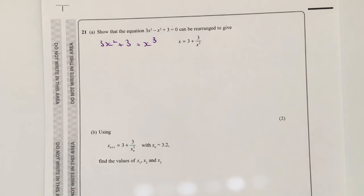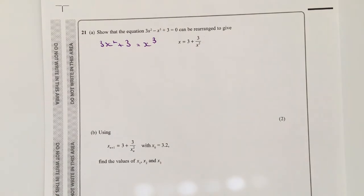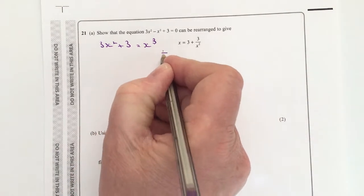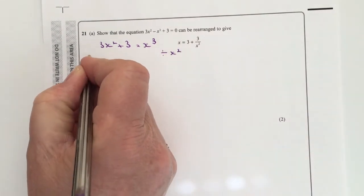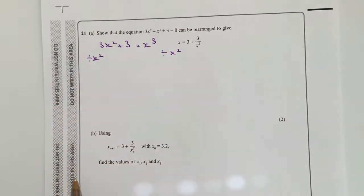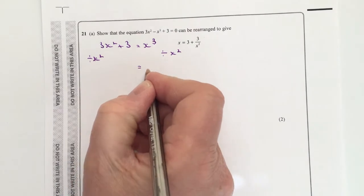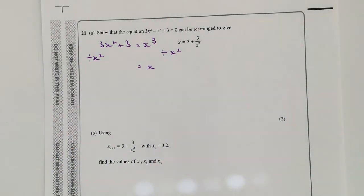And then I want to solve, or at least I want to make x the subject of this particular formula or this particular equation. So what I'm going to do is divide through by x squared. Now on the right-hand side, that means that x cubed divided by x squared is going to be equal to x on its own, which is exactly what I'm looking for.